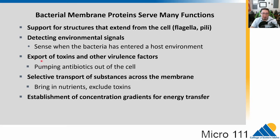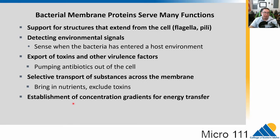The membrane also performs selective transport of substances — bringing in nutrients, excluding toxins like antibiotics, and establishing concentration gradients for energy transfer. Bacteria regulate the concentration of certain things inside and outside the cell, then allow them to move, and this can do different types of work for the cell.